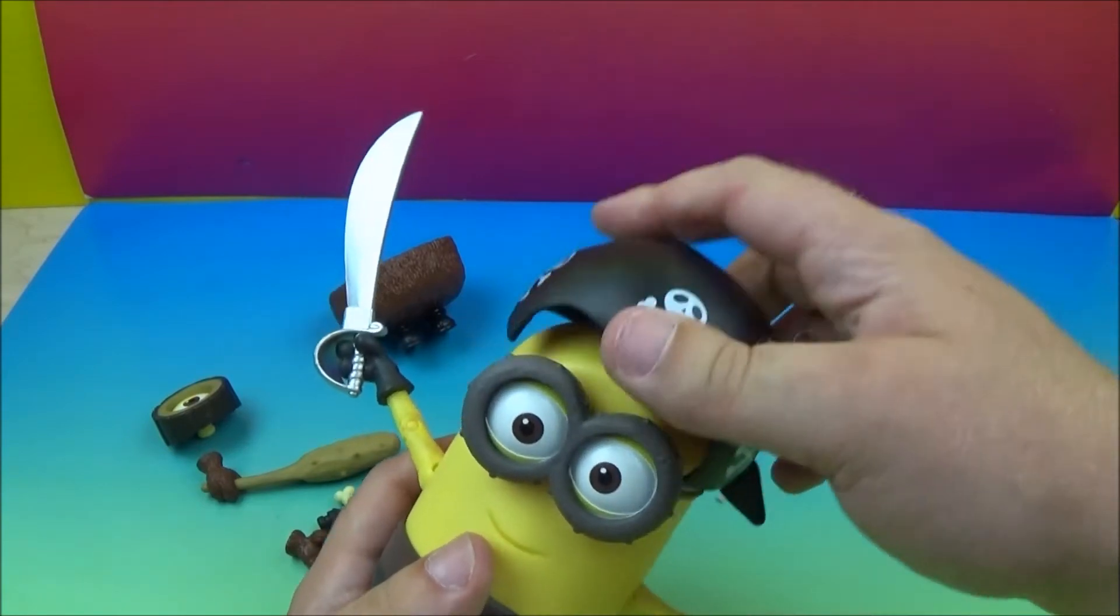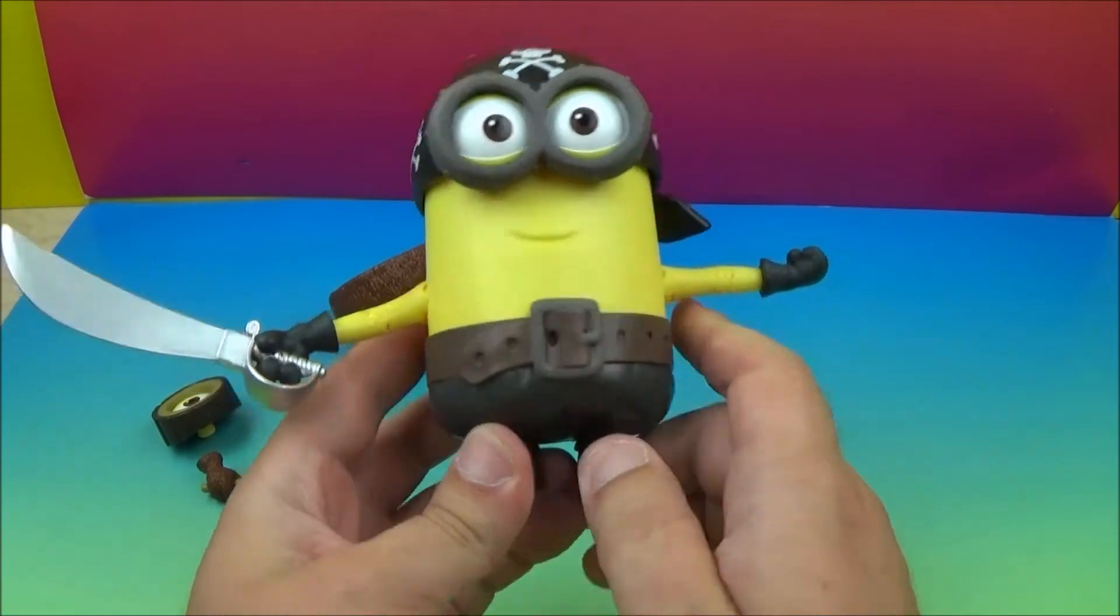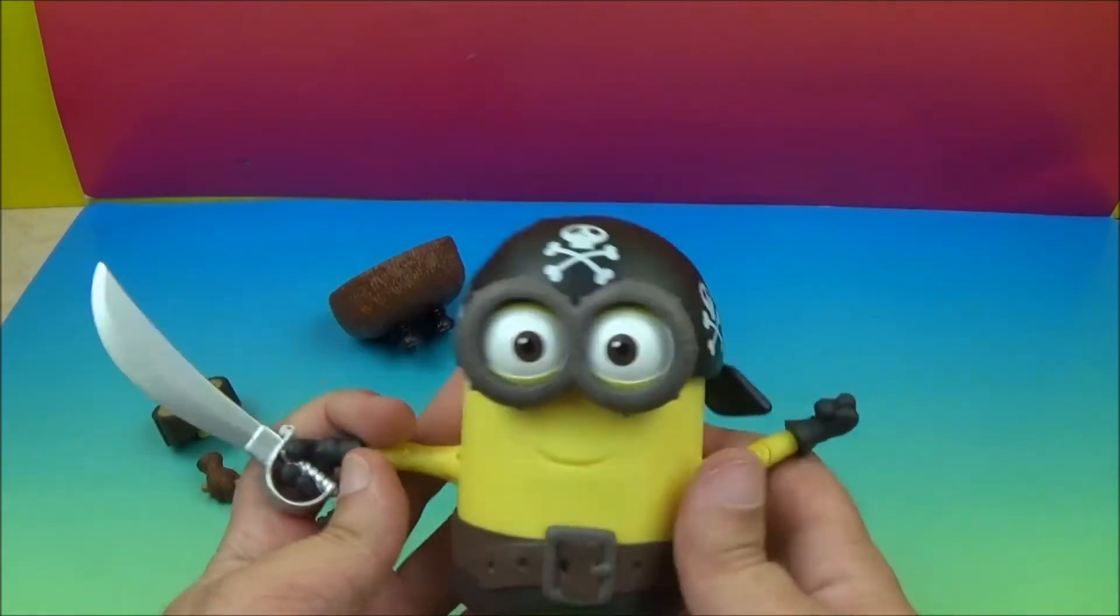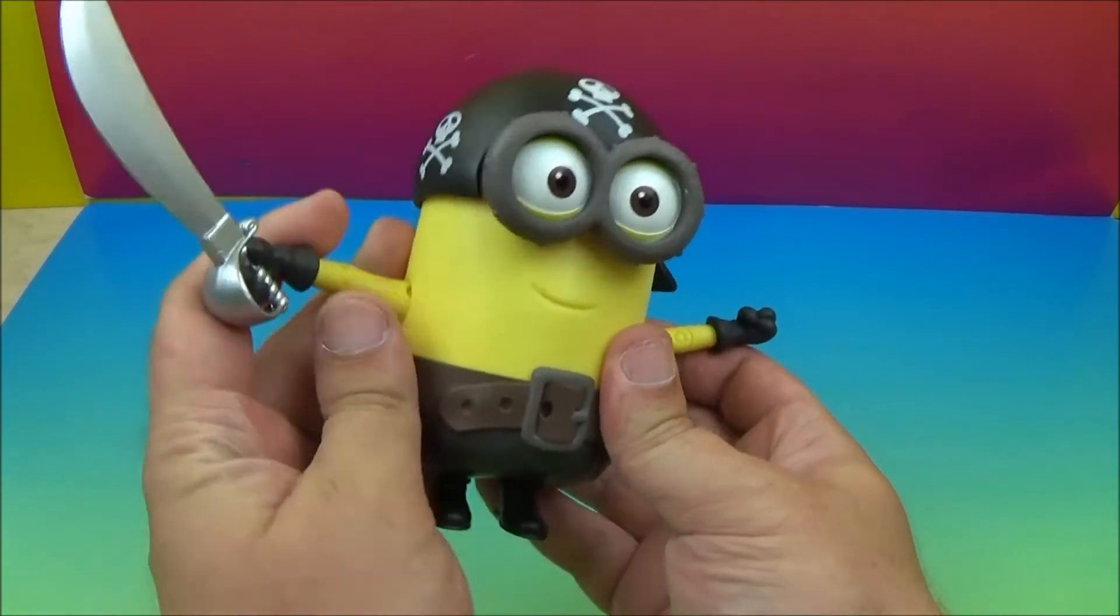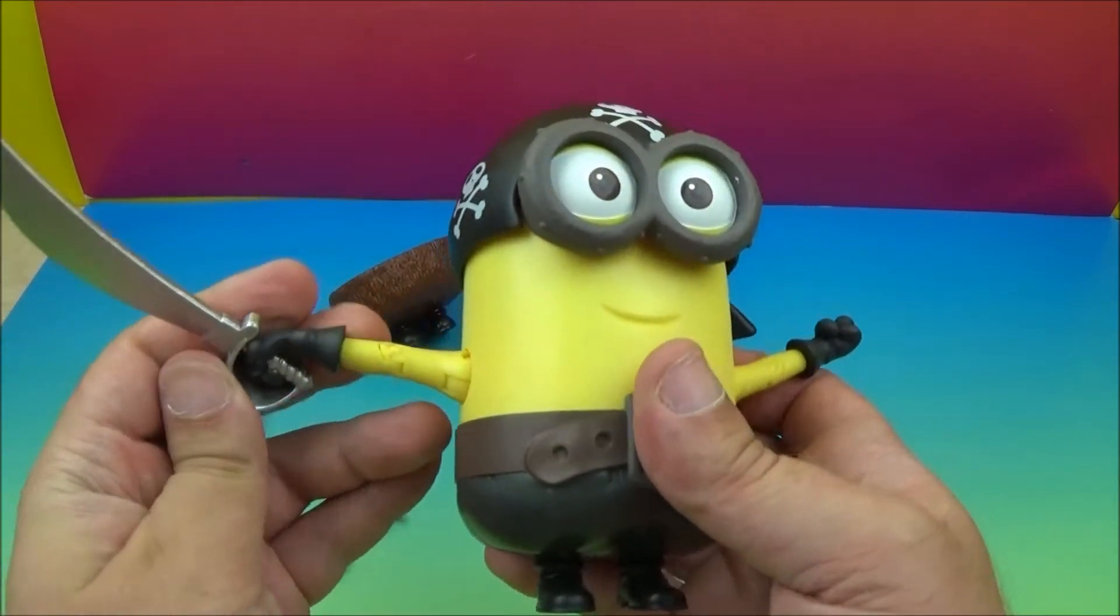And then we'll put his bandana on with the skull and crossbones. And then you have the Pirate. You can pose his feet a little bit there, his arms. And he's ready for some swashbuckling action with his Cutlass.